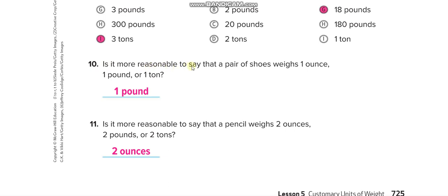Is it more reasonable to say that a pair of shoes weighs one ounce, one pound, or one ton? One ounce will be too less, like a strawberry. One ton, like a car? No. Of course, one pound. Is it more reasonable to say that a pencil—the pencil is a lighter thing, so we'll choose the lighter unit—two ounces.